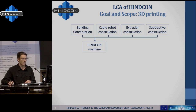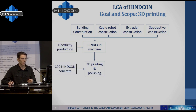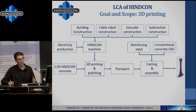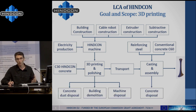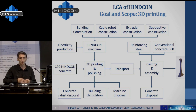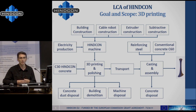On top of this we need electricity to run the machine and the concrete itself to print. Then we have the transport step, and finally the casting and assembly of the pillar, consuming some reinforcing steel and some concrete to fill in the pieces. Finally we have some waste that needs to be disposed of — concrete dust from polishing or losses during casting, but also the machine itself. At the end of its useful life it will have to be dismantled, some of it recycled, other parts sent to a landfill. All of this is taken into account in the study.